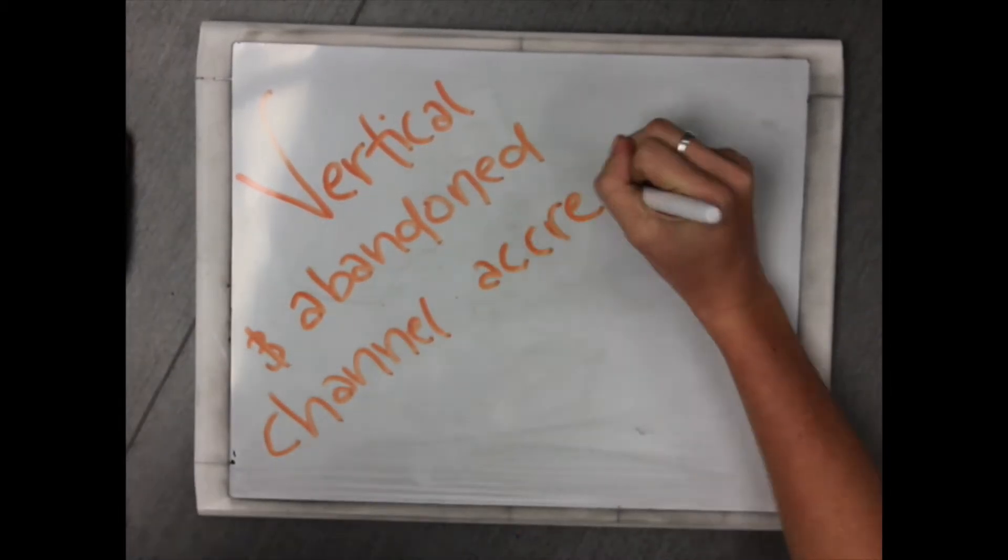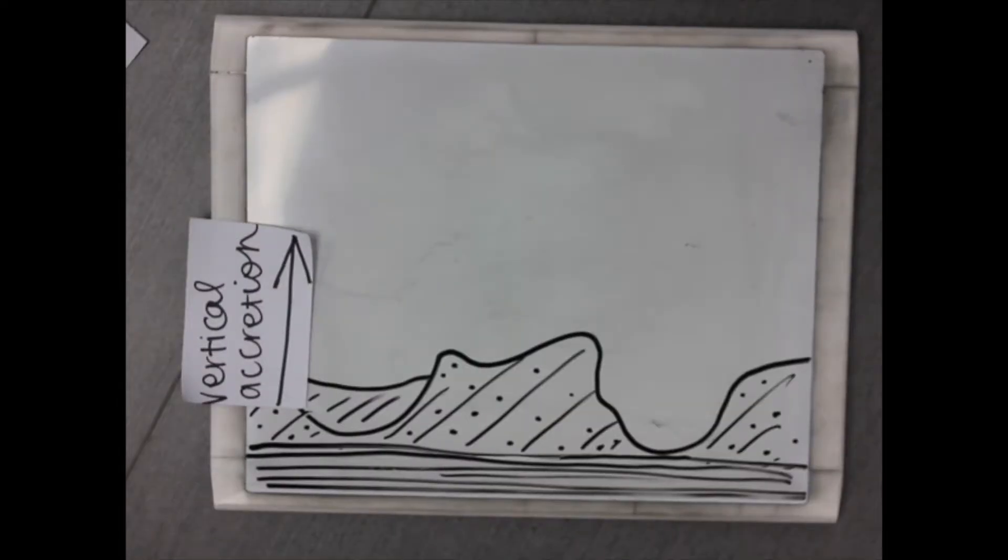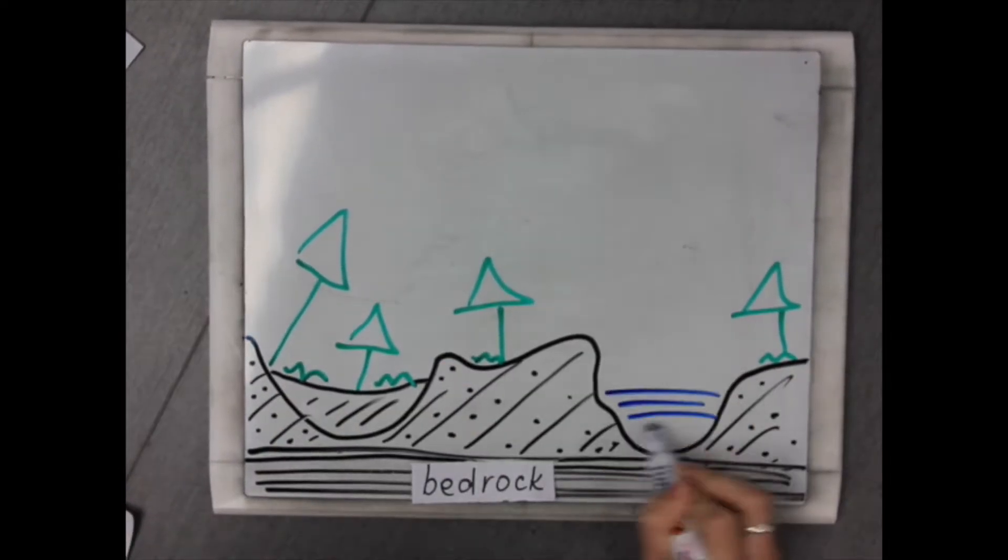And in an alluvial meandering system, this overland flow spills into an abandoned channel, located next to the primary channel.